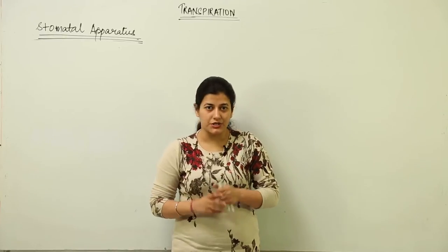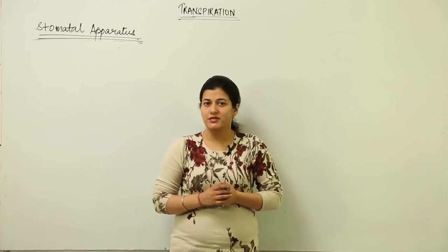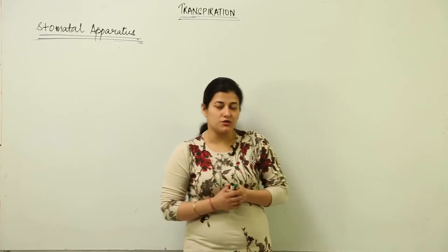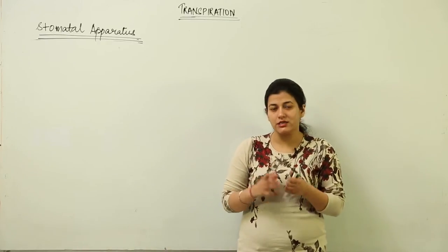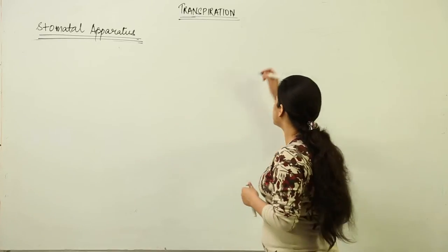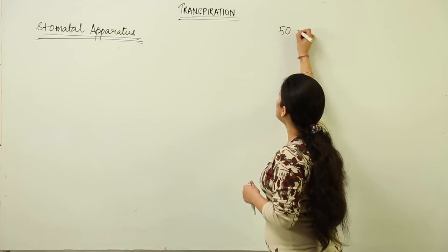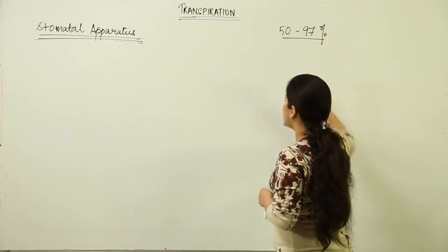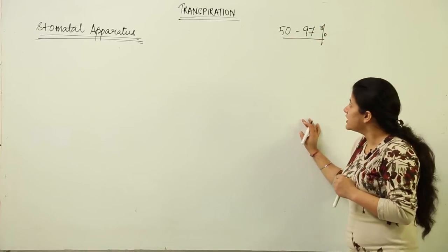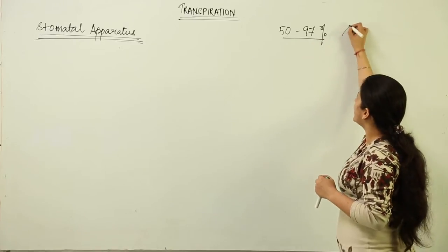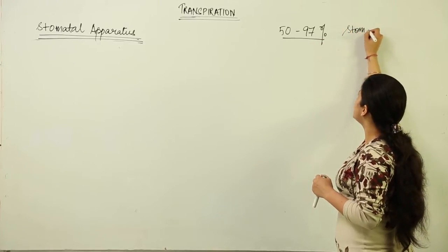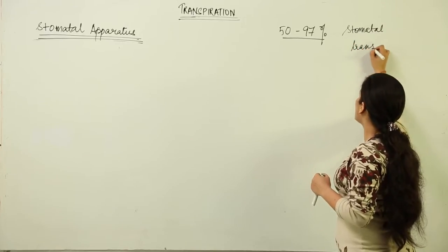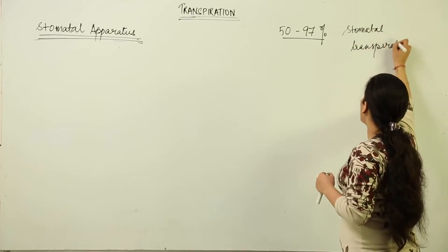Under the topic of transpiration, we are going to discuss the stomatal apparatus. The reason we study it is that as much as 50 to 97 percent of total transpiration that takes place in a plant occurs through stomata, and we term this stomatal transpiration.